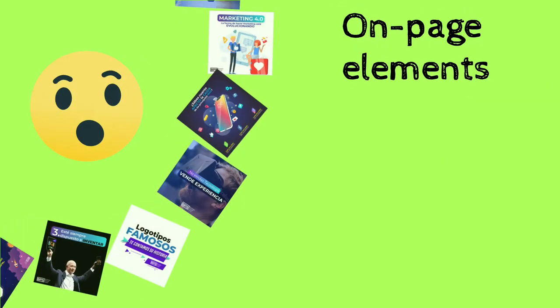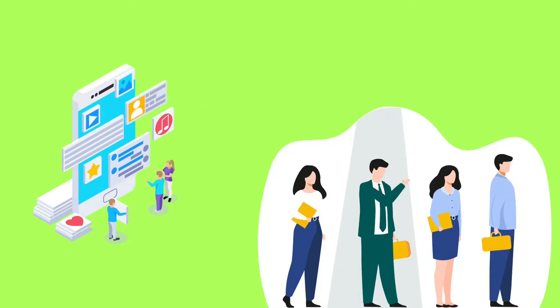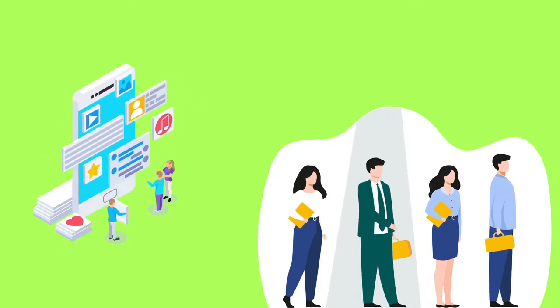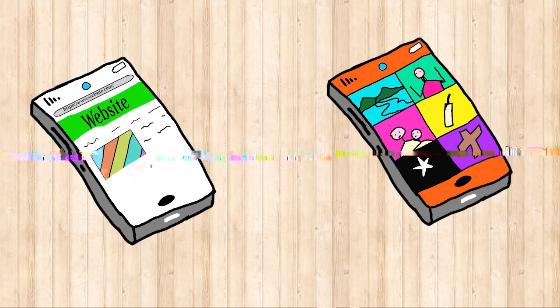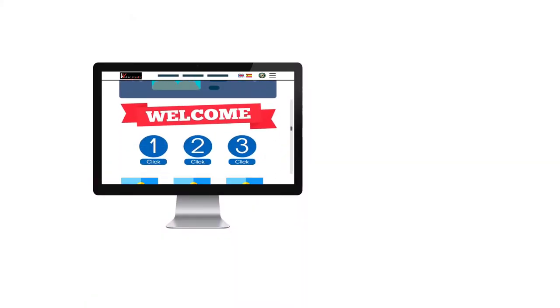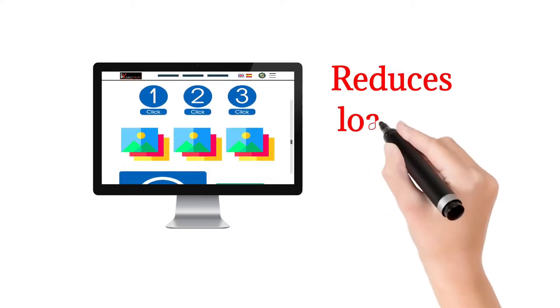On-page elements like images, videos, thumbnails, scripts, and other media files take some time to load. So when these data are cached, the app need not load them again. It just has to display them from storage, which reduces their loading time.